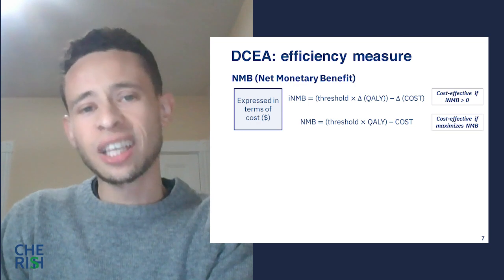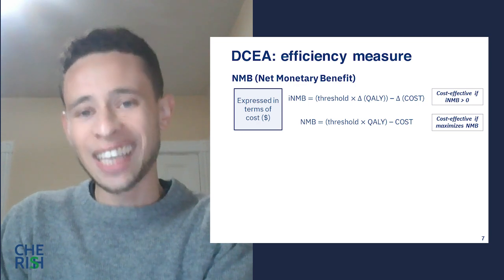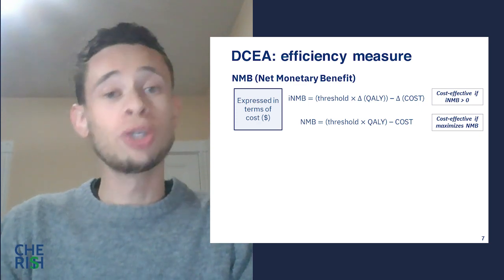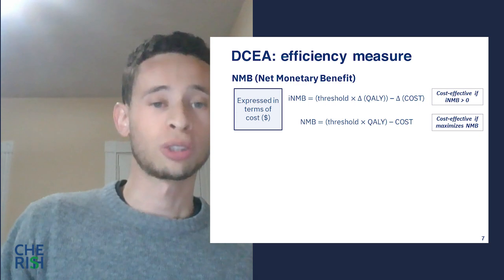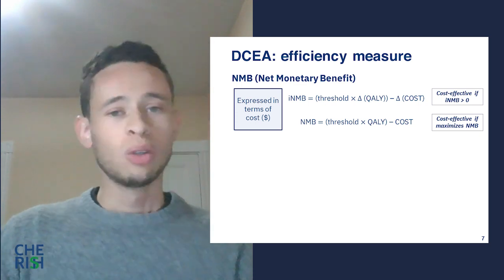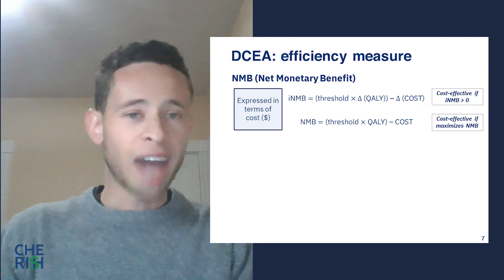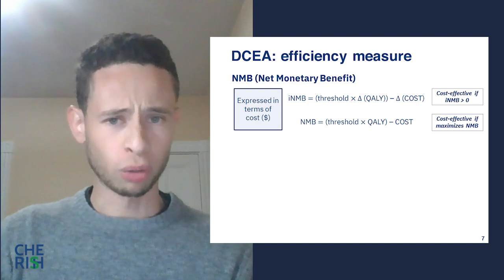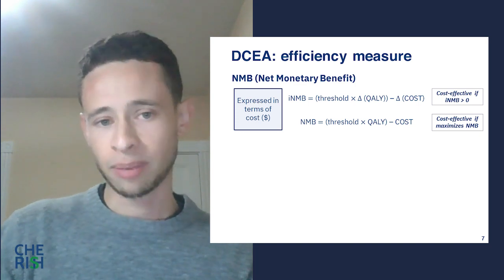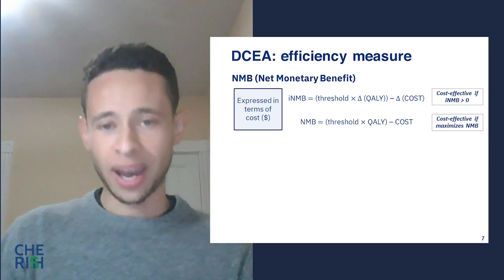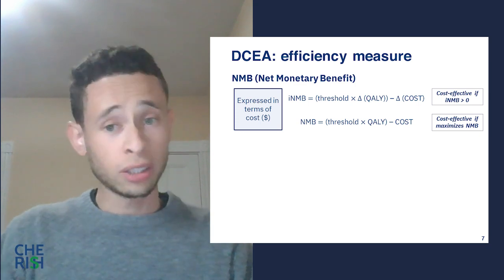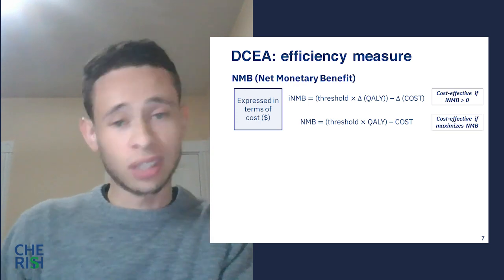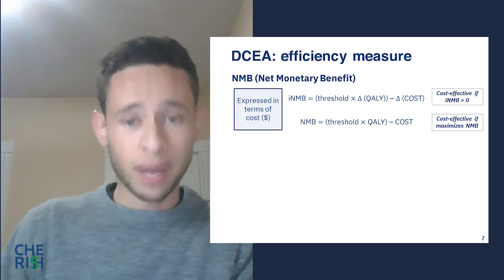When analyzing efficiency and equity trade-offs in DCEA and representing them in a plane with two axes, we ideally want an aggregate measure of efficiency impact to compare with an aggregate measure of equity impact. The net benefit approach is often useful here because it combines health effects and costs into a single summary measure: either the net monetary benefit (NMB) or the net health benefit (NHB).